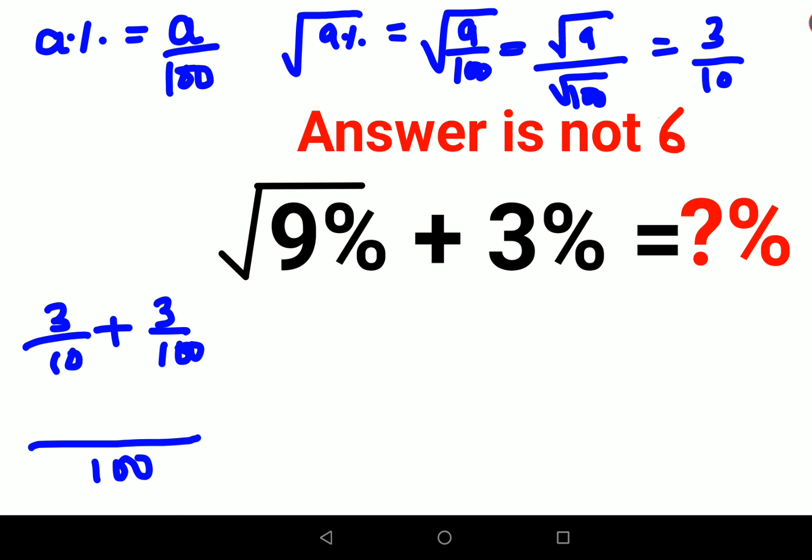Now here in order to make this denominator as 100, we need to multiply by 10. So this will become 30 plus 3 upon 100. So answer comes out to be 33 upon 100.